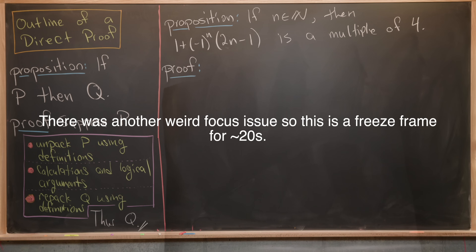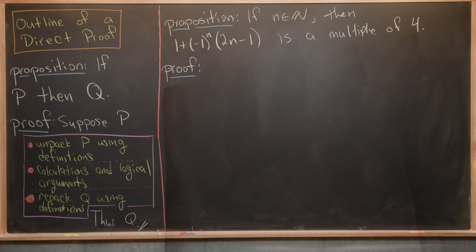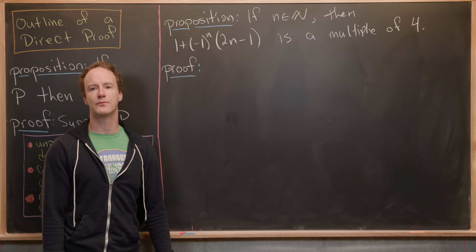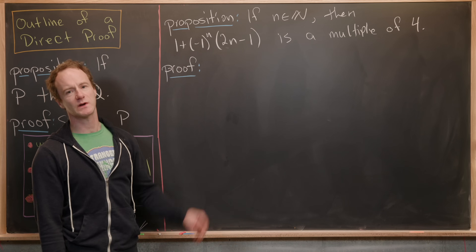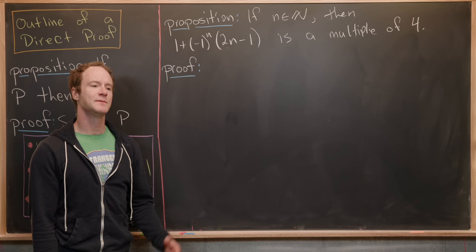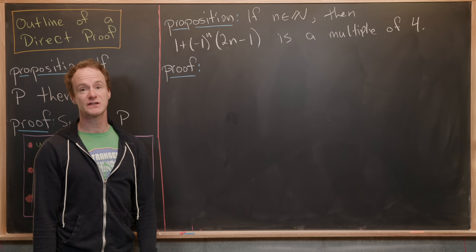Let's get into our examples. The first proposition says: if N is a natural number (a positive integer), then 1 + (−1)^N × (2N − 1) is a multiple of four. There's not much to unpack for P since the definition of natural numbers doesn't require unpacking. The hint that we need two cases is the (−1)^N term: it equals +1 if N is even, and −1 if N is odd.